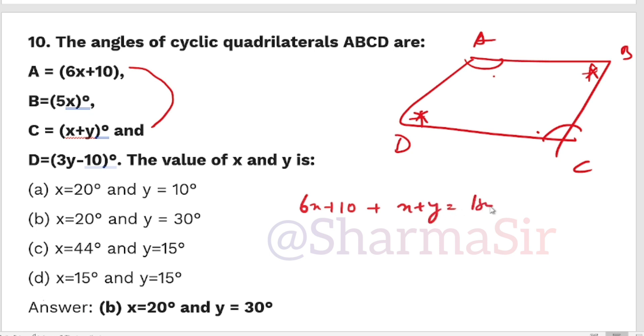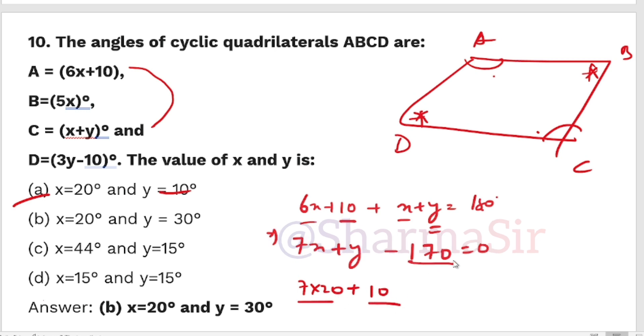For B+D=180: 5x + 3y-10 = 180, so 5x+3y=190. Solving these equations. Checking options: 20 times 7 is 140 plus 30 equals 170. 20 times 7 is 140 plus 30 is 170. So x=20° and y=30° is our correct answer, option B.